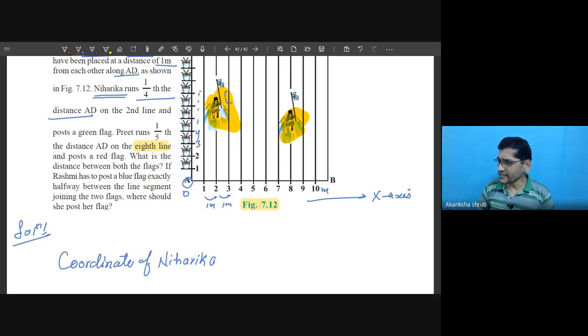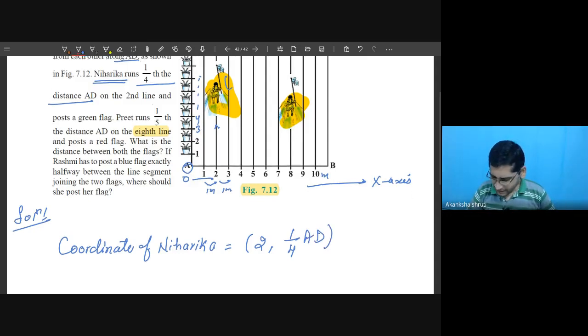First we have to look for the x-axis. On x-axis we are getting that this person Niharika is running on the line two, so the x coordinate is your two.